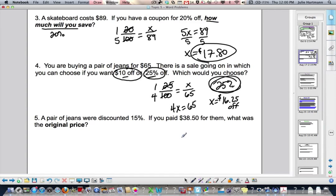Okay? Number 5, a pair of jeans were discounted 15%. If you paid $38.50 for them, what was the original price? Hmm. A little tricky on this one. They were discounted 15%. So, what did you actually pay? $100 minus 15, you paid 85%.